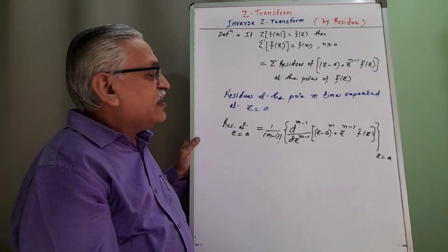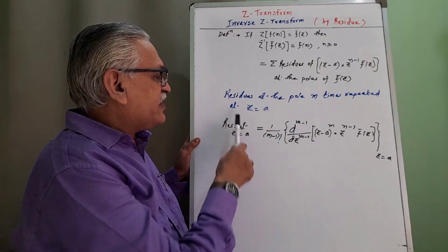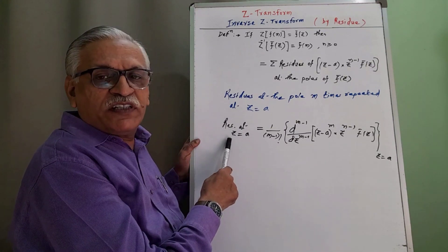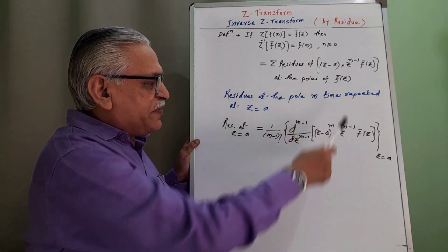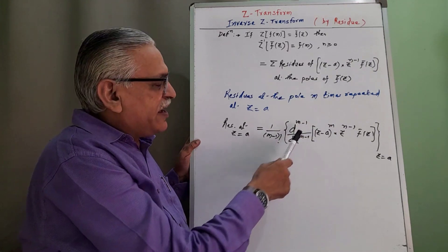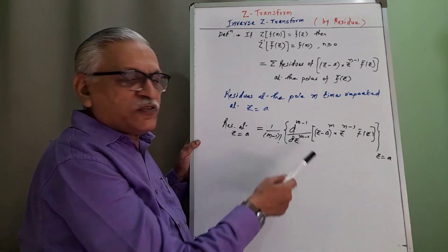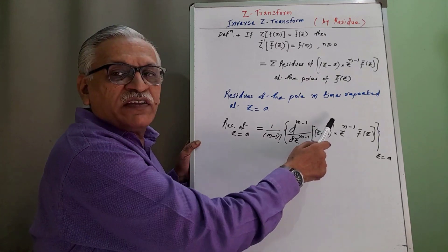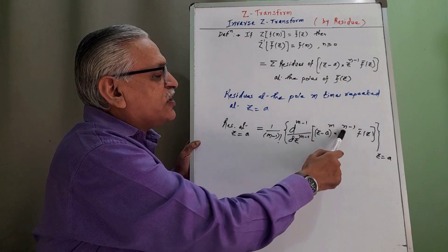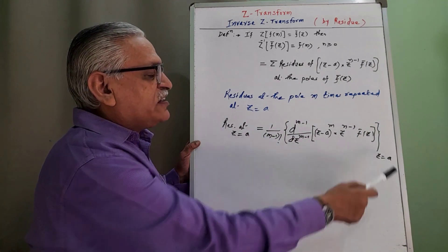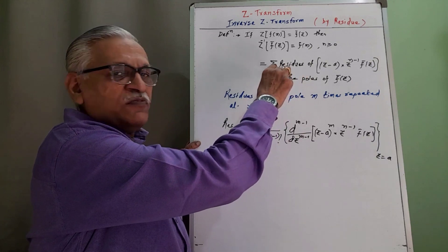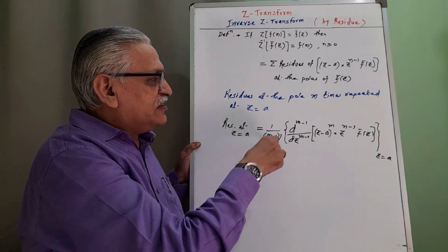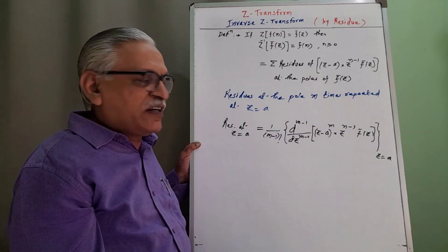The second technique: residue at a pole Z = A repeated M times is obtained by (1/(M−1)!) times the (M−1)th order derivative with respect to Z, that is D^(M−1)/DZ^(M−1) of (Z − A)^M multiplied by Z^(N−1) into F̄(Z), evaluated at Z = A. So the first form is for simple poles and the second form is for M-times repeated poles.